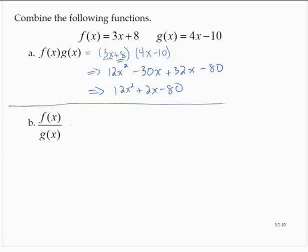f of x over g of x, we would just divide. We would just write a fraction with those two functions. So we'd have 3x plus 8 over 4x minus 10.